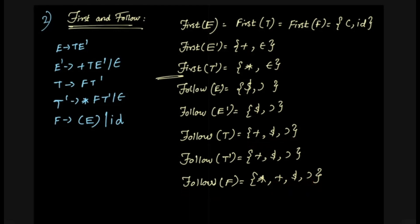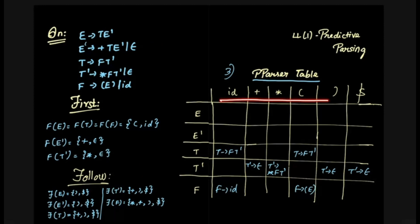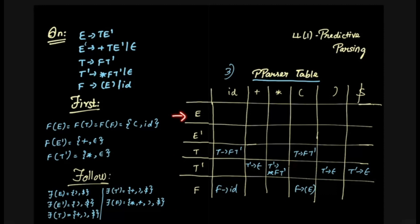Now we will talk about how to construct a predictive parse table. When we construct the predictive parse table, the columns are all terminals plus dollar. Then we write the non-terminals and fill the rows. The row is filled using FIRST and FOLLOW. The FIRST of E is open bracket and id. So in those two columns, E gets the production E tends to T E-dash. We substitute it — we write E tends to T E-dash in the id and open bracket columns.